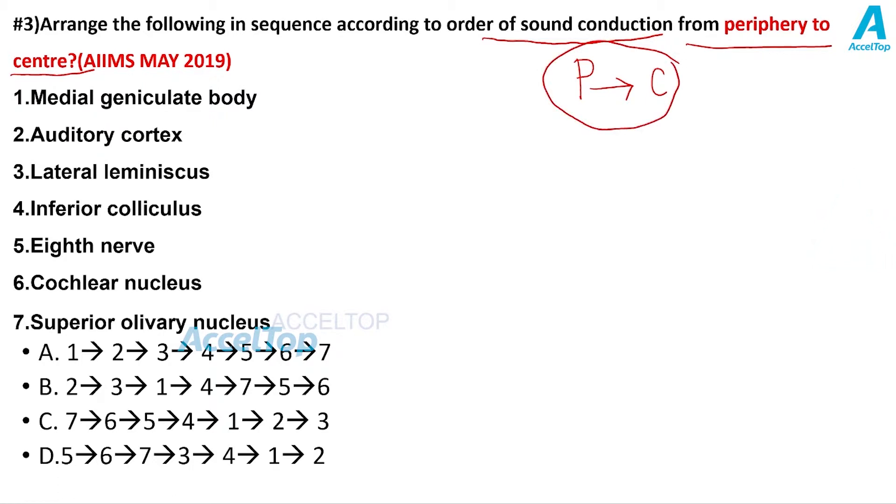What are the options here? The first option is medial geniculate body, second one is auditory cortex, third option is lateral lemniscus, fourth one is inferior colliculus, fifth option is eighth nerve, sixth option is cochlear nucleus, the seventh option is superior olivary nucleus.